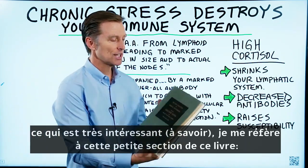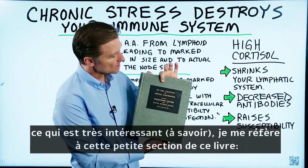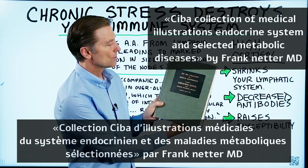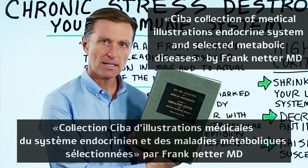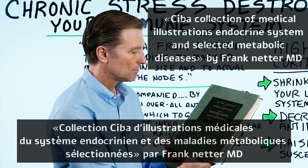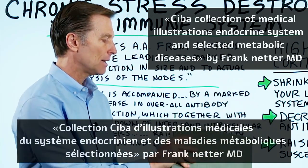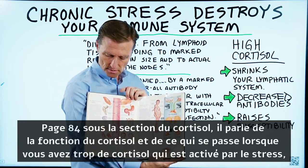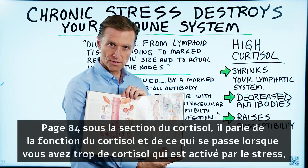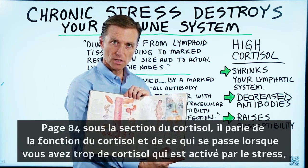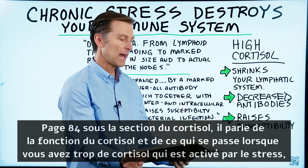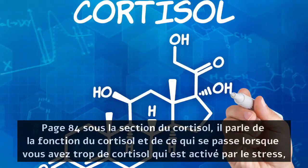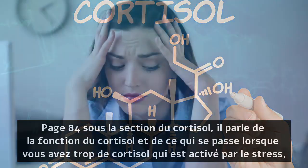I'm taking this little section out of this book right here — Ciba Collection of Medical Illustrations, Endocrine System and Selected Metabolic Diseases by Frank Netter, MD, page 84, under the section on cortisol. He's talking about the function of cortisol and what happens if you have too much cortisol, which is activated by stress.